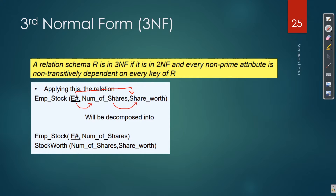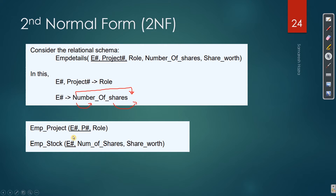So previously, when we decomposed that actor relation into R1 and R2, R1 is in 2NF as well as 3NF. Because there is no transitive dependency - the non-prime attribute 'role' has no transitive dependency here. That is why it is in both 2NF and 3NF.